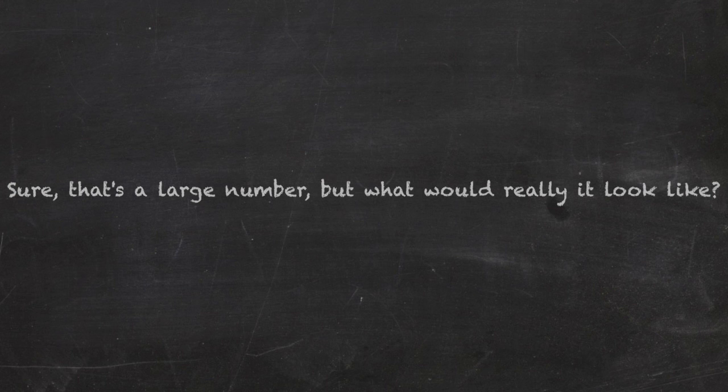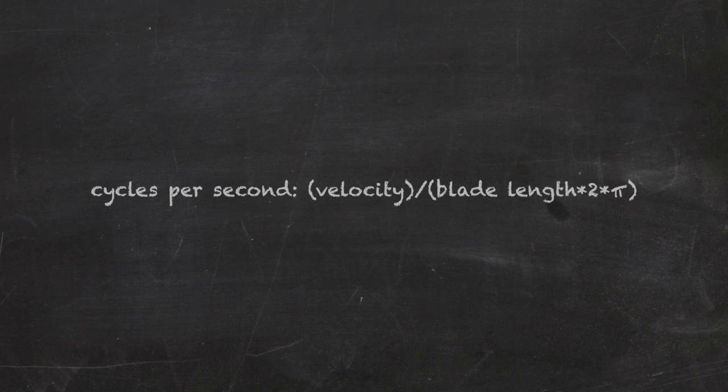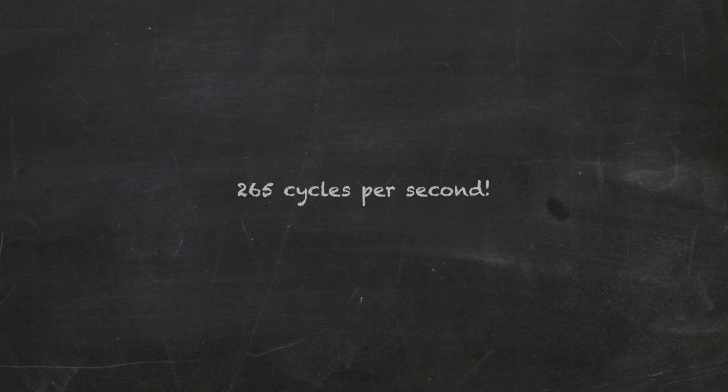Sure, that's a large number, but what would it really look like? I don't really want to get into more equations, but here's what we can use to find out how many full cycles per second one of the blades needs to make. Since there are 12 blades, each one needs to spin nearly 265 cycles every second.